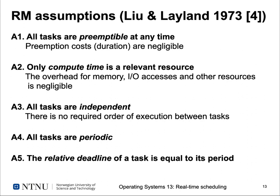Our second assumption is that we only consider compute time — CPU time — as the relevant resource, not considering overhead for memory accesses, I/O accesses, or other resources. The third assumption is that all tasks are independent of each other, so there is no required order of execution between tasks — one task does not generate data required by another. The fourth assumption is that all tasks are periodic, so we only define a schedule for one period and it repeats. And finally, the relative deadline of a task is equal to its period, to make the analysis easier.